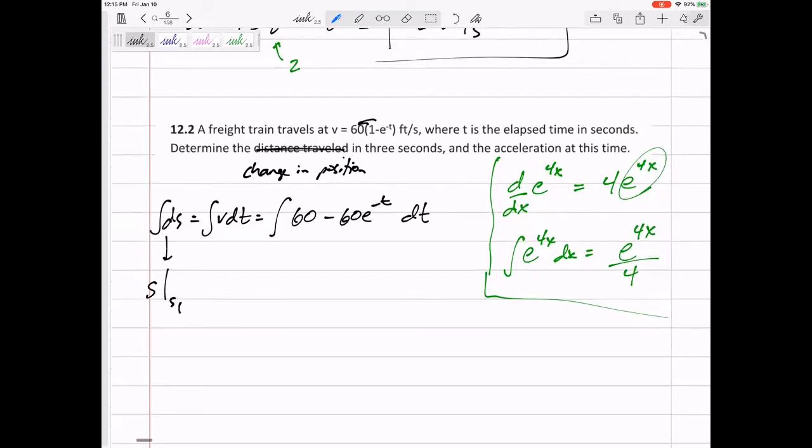So, this would be s. I'm going to do these as definite integrals. S initial, s final. So, s_f minus s_i. And that is what I'm looking for. That is the change of position. All right. So, the integral of 60 would be 60t.